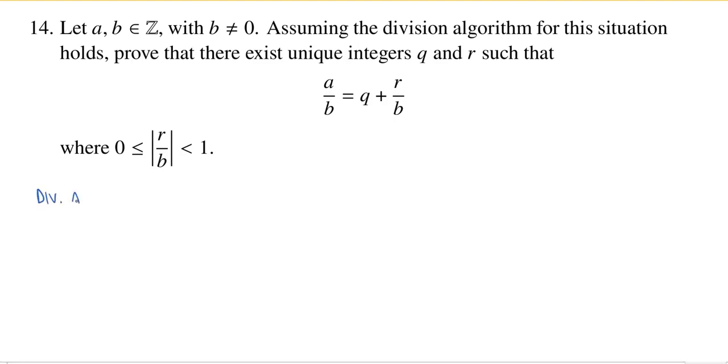The division algorithm, in the situation where we have two integers and all we know is that one of them is non-zero, says that there exists a unique pair of integers Q comma R such that A is equal to Q times B plus R. So Q is supposed to be the quotient and R the remainder.